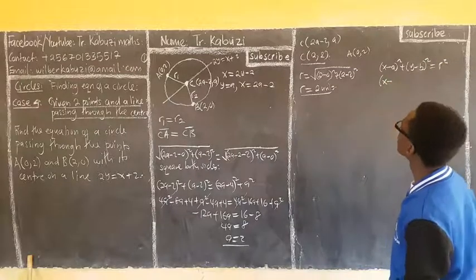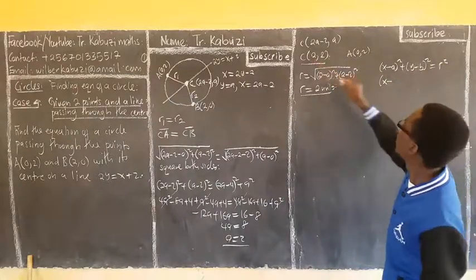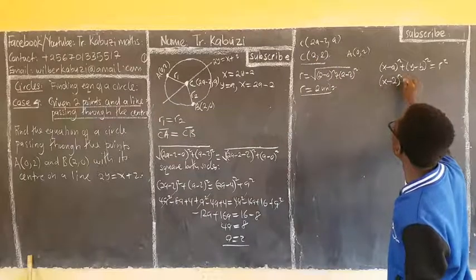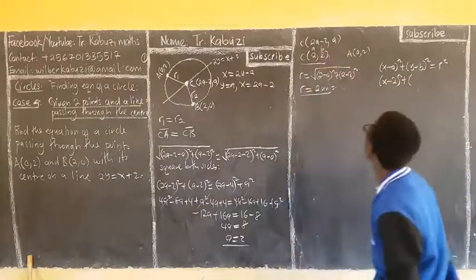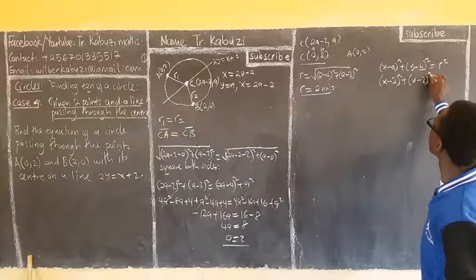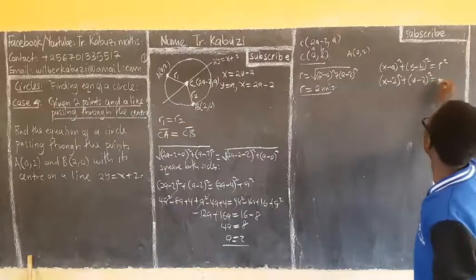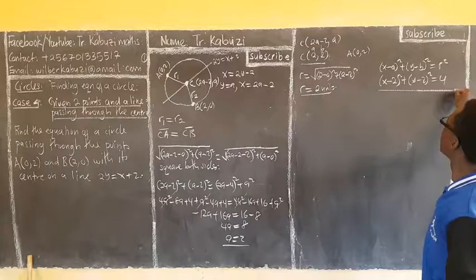x minus the coordinate of the center, which is 2 squared, plus. So, in simple terms, this is my a, this is my b. y minus 2 squared, equal to my square root. I will be getting a 4.